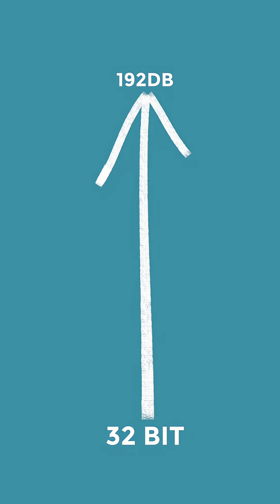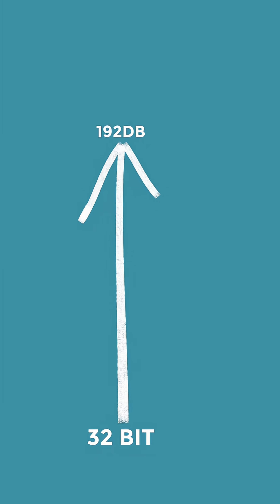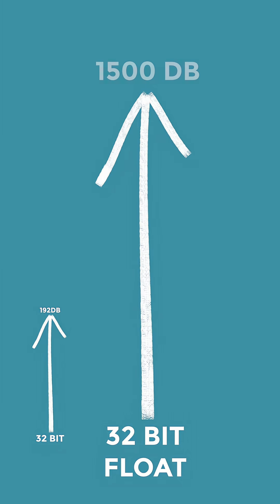And the dynamic range? 32-bit fixed point has a theoretical dynamic range of 192 decibels. Pretty good. But 32-bit float has a theoretical dynamic range of 1500 decibels. Yes, it's overkill — your ears will never be able to hear that — but it makes post-processing so much easier.